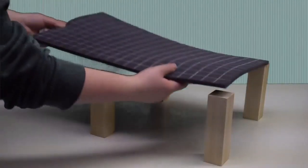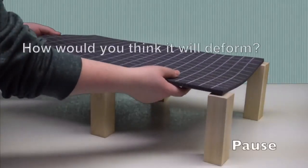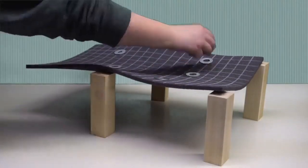Suppose we had a floor with an overhang. How do you think it would deform? Here is what the model shows us.